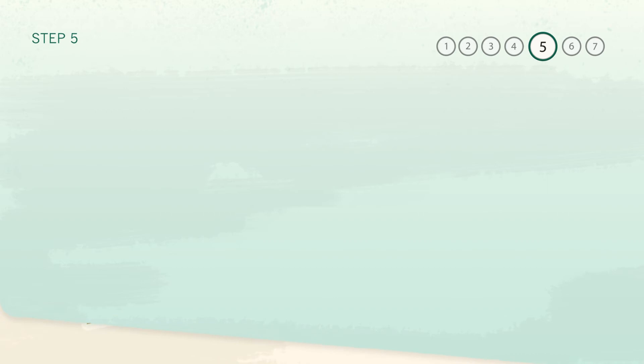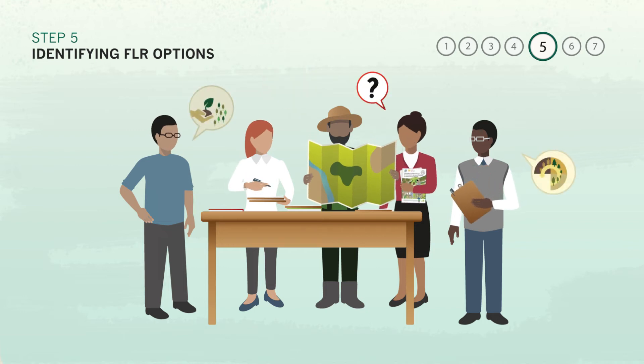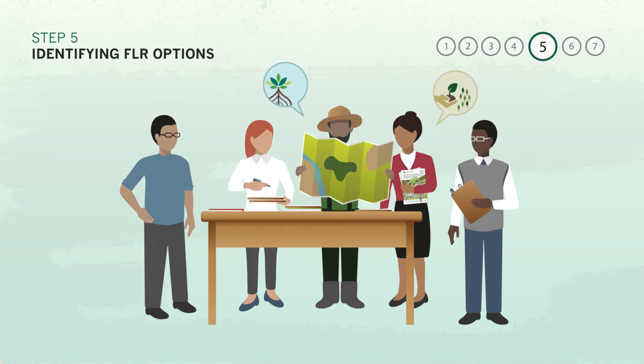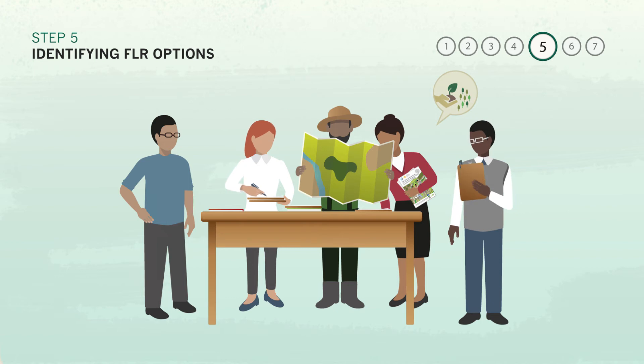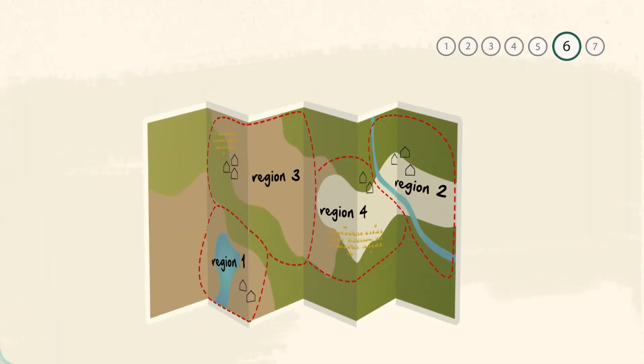Next, the assessment team leads all stakeholders in identifying locally appropriate restoration interventions for each of the geographic areas. A long list of interventions can be made and narrowed down over time as different stakeholder groups add their knowledge and experience. Usually, between 5 and 15 good restoration options will make the final list for analysis within a particular landscape.